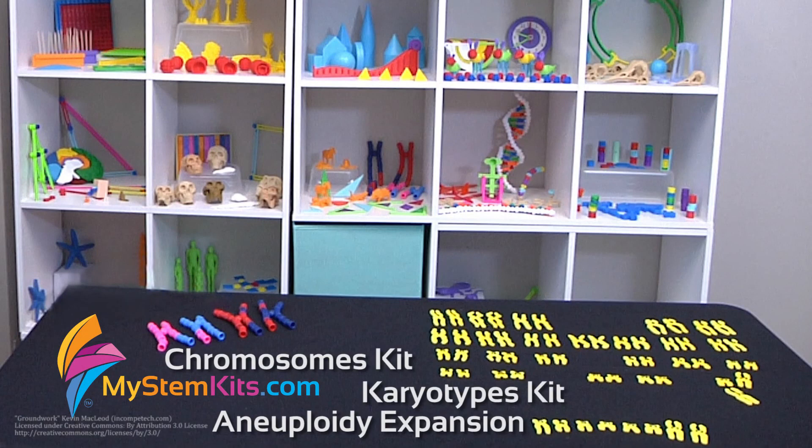So whether you are going through mitosis and meiosis, you're doing crossing over, you're going through all of the stages there with the chromosomes kit, you're integrating it with Punnett squares, with genetics, or you're going deep into karyotyping and understanding genetic variation between related individuals, we really hope you enjoy using these three kits in your classroom. Thanks for listening and have a great day!